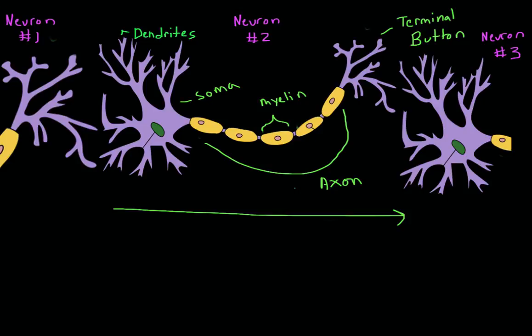So on the screen here, I have three neurons, although you can only see one of them in their entirety. First we have neuron one, where you can only see the end of its axon and its axon terminals. Then we have neuron two, which is the neuron we can see all of. And then we have neuron three, where you can just see its dendrites and its cell body and the beginning of its axon.